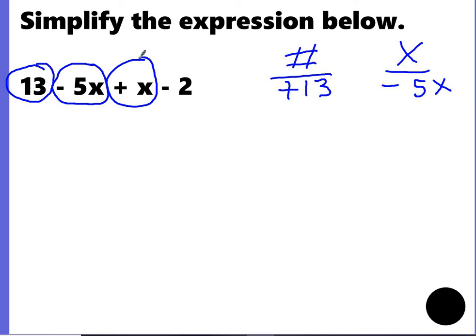Then I've got a positive x, and if it doesn't have a number in front of it, that number is 1. And then I have a negative 2, so I'm going to put a line across.